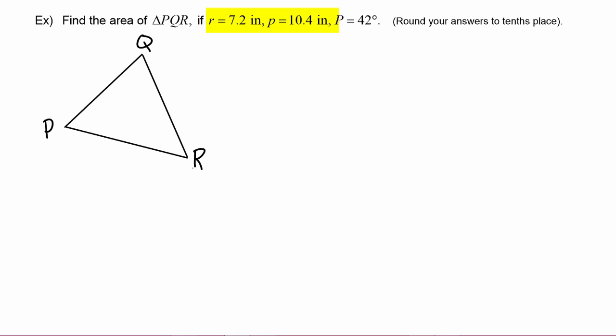Now we're ready to label our given information on it. We have that side r is 7.2 inches, so we know that's the side opposite angle R, so that would be this side. p is 10.4 inches, so that's the side opposite angle P, and we're given that angle P is 42 degrees.